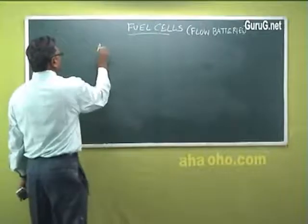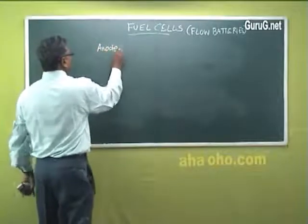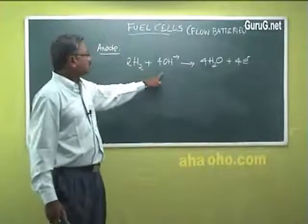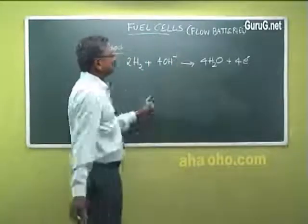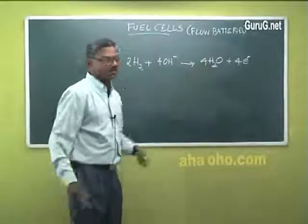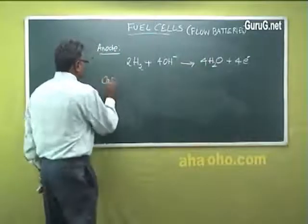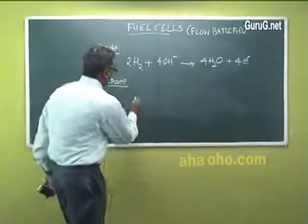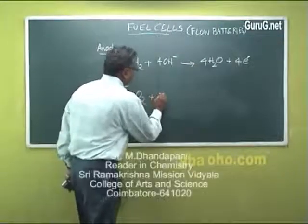At anode the hydrogen reacts with hydroxide ion to produce water and four electrons. At cathode oxygen takes up water and four electrons to produce four OH minus.